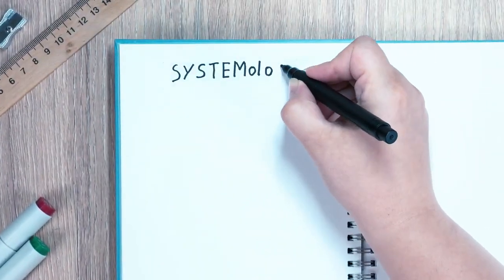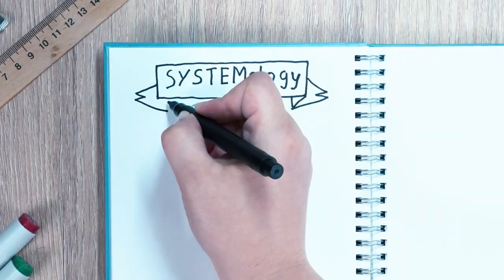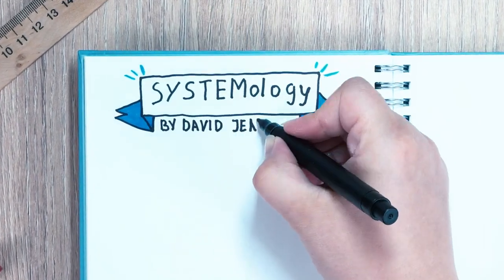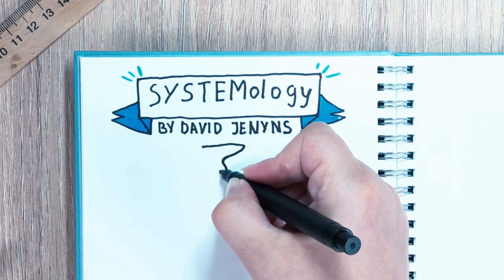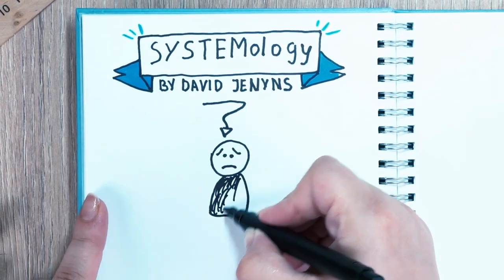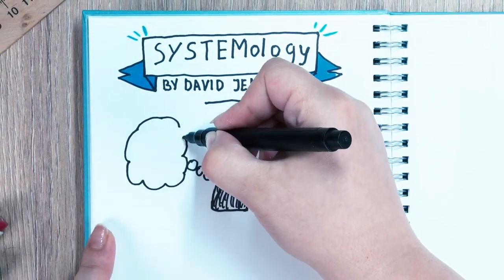In the book Systemology, author David Jennings delivers his step-by-step system to tackle one of the biggest problems faced by most business owners. They're trapped in the day-to-day operations and cannot afford to step away from their business for more than a day or two without everything grinding to a halt.